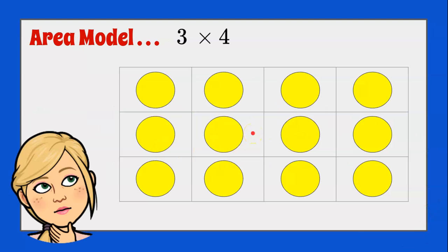We could also use the area model to represent multiplication. Think of this as a rectangle. If I find the area of this rectangle, this is 1, 2, 3, representing 3 units. And then 1, 2, 3, 4 units. 3 times 4 is 12. If I fill in the area of the rectangle, I have 12 chips. 3 times 4 is 12.